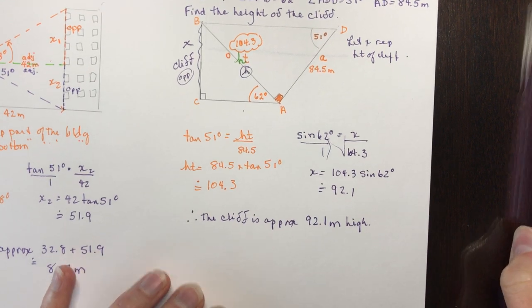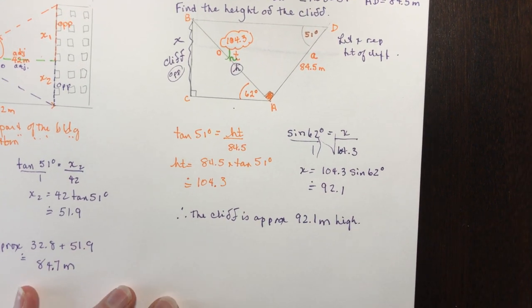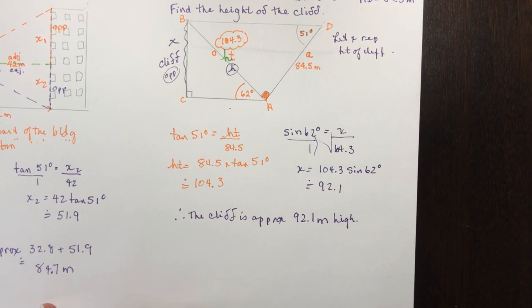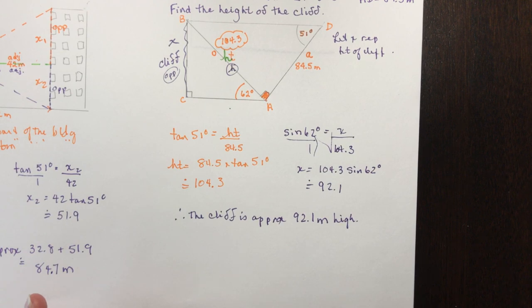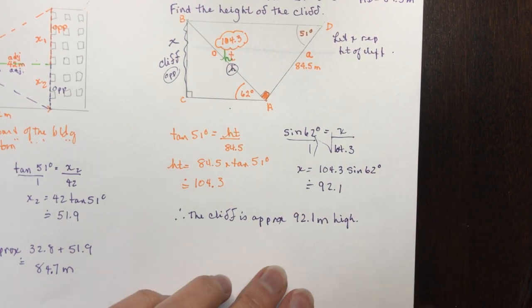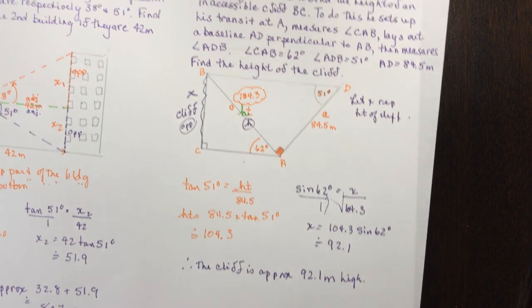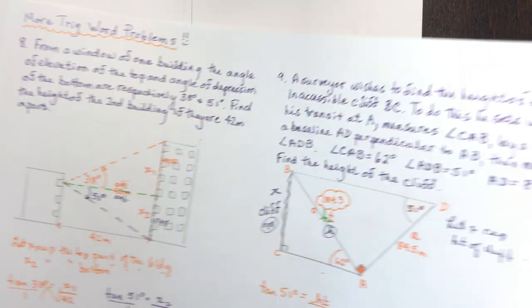Therefore the cliff is approximately 92.1 meters high. That's another surveyor question — you'll get lots of those.